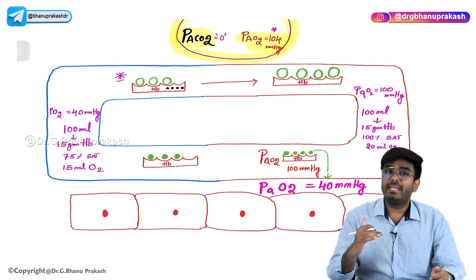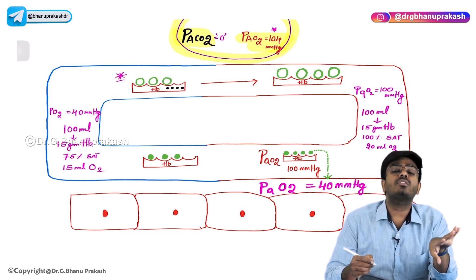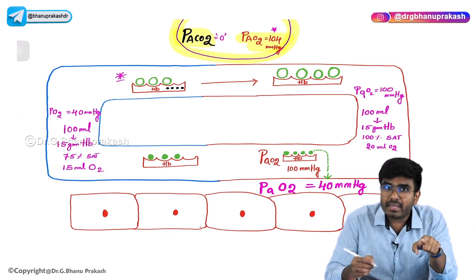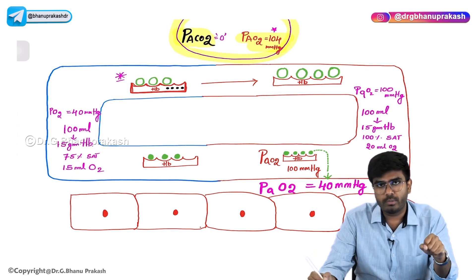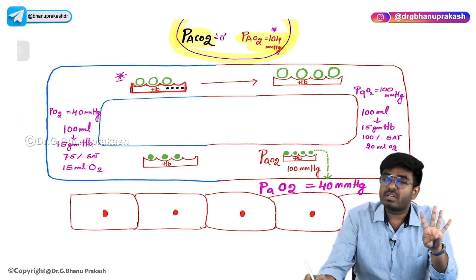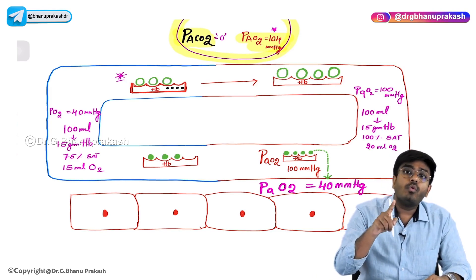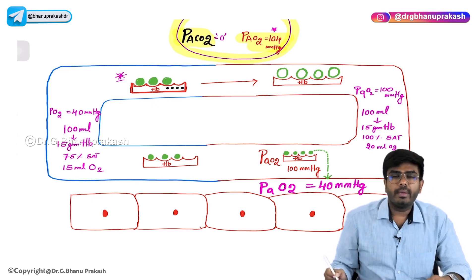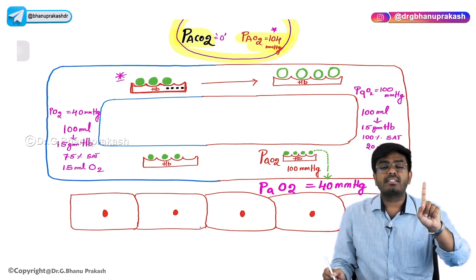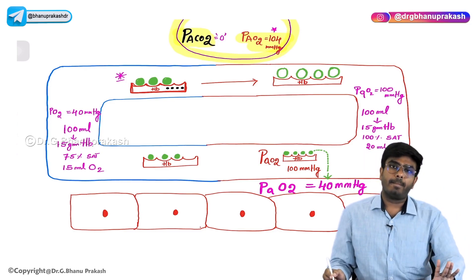When we say deoxygenated blood, students often think there is no oxygen in it — but that is wrong. The hemoglobin molecule (abbreviated HB) normally carries four molecules of oxygen. Even in venous blood, you can see the hemoglobin is still carrying three molecules of oxygen. So even in venous blood, there is oxygen — one molecule of hemoglobin is still carrying three molecules of oxygen. The black dots in the image represent carbon dioxide, which is bound to hemoglobin as carboxyhemoglobin in the venous blood.